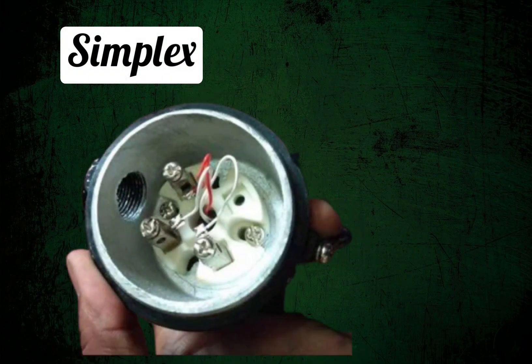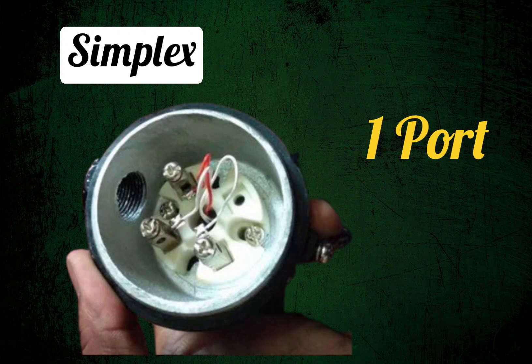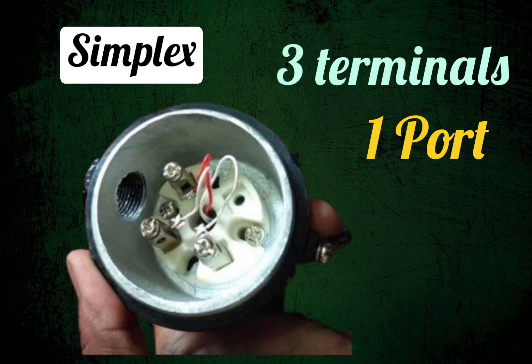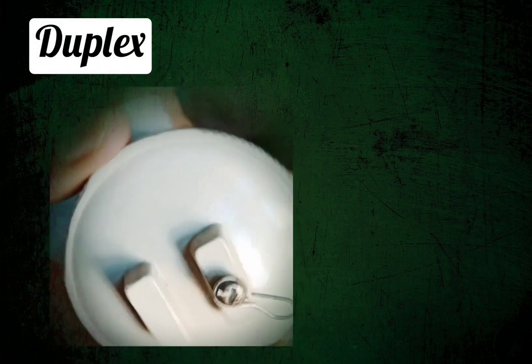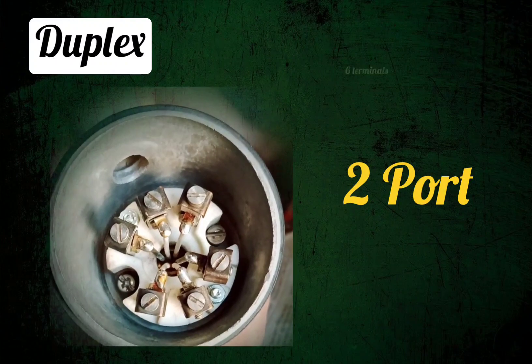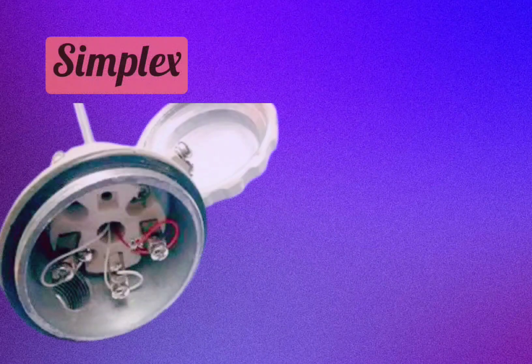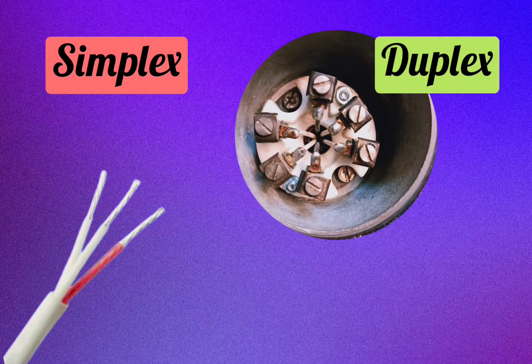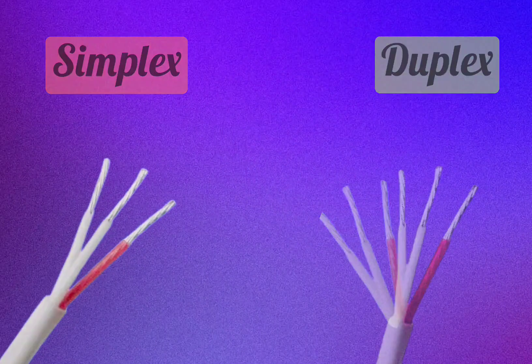Simplex RTD has only one port for connections, means it has three wires for connections. And duplex RTD has two ports for connections, means you can see six wires for connections. So if you are using simplex RTD, then you will require a three-wire cable. And for duplex RTD, you will require a six-wire cable.